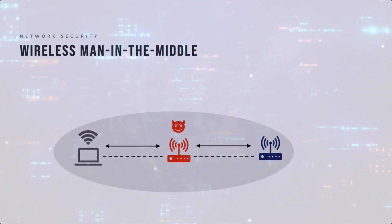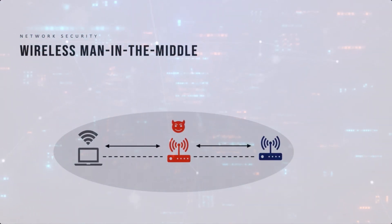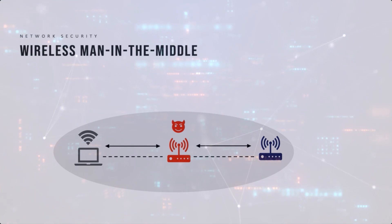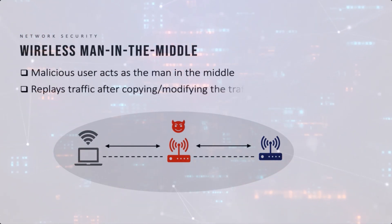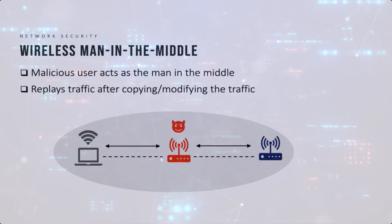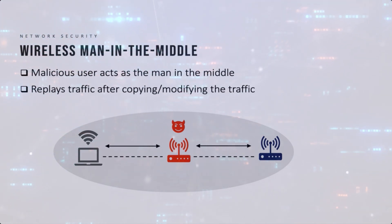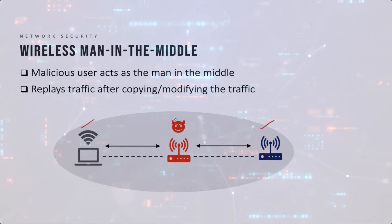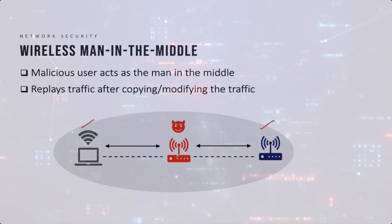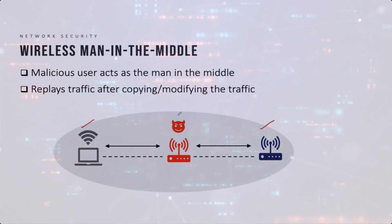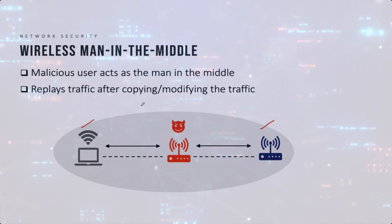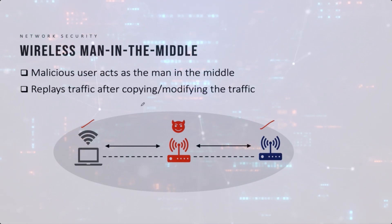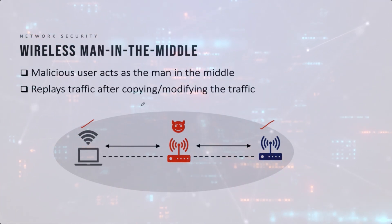Another popular attack in wireless networks is the wireless man-in-the-middle attack. This concept is actually very old and works for both wired and wireless networks. The basic idea is that a malicious user sits in between and replays traffic after copying or modifying it. Neither of the two end stations has any idea that a malicious user is between them because he simply relays the traffic. He can either copy the traffic to steal credentials, or go further and modify the traffic to cause additional damage to the end systems.